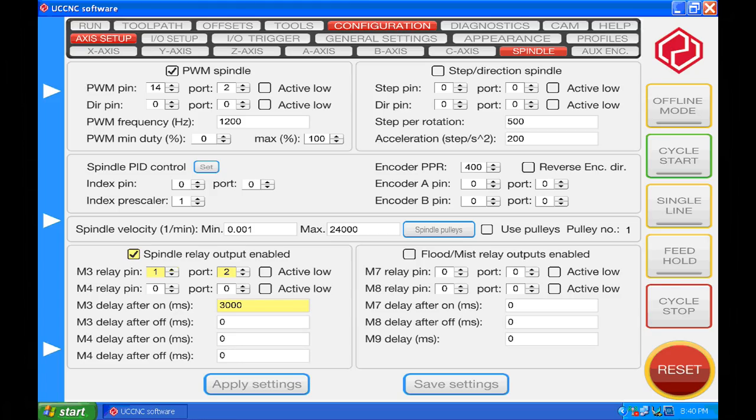If you're using UC CNC software the setup is very similar. Check the spindle relay output enable. Set the relay pin number in this case pin 1 on the parallel port going into the Gecko G540. Select the port number in my case port 2 on the UC300 Ethernet controller. Set the M3 delay after the relay has turned on. Apply the settings and save the settings.